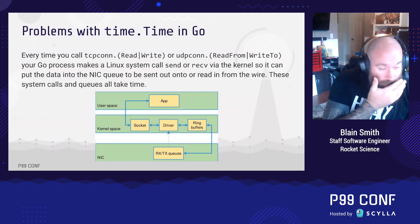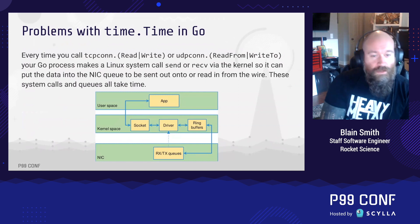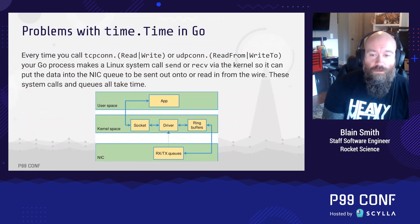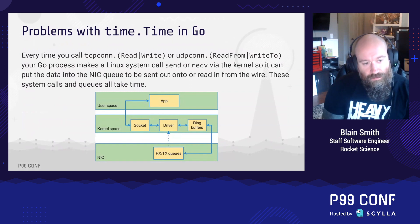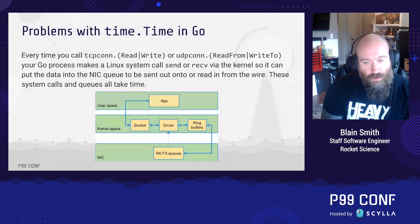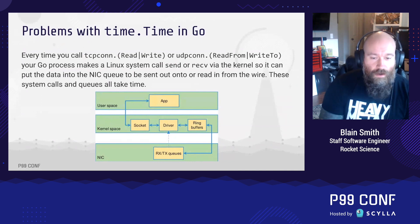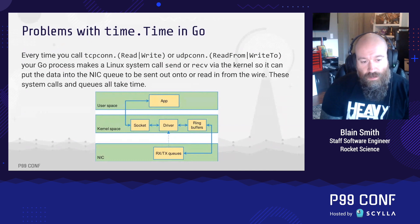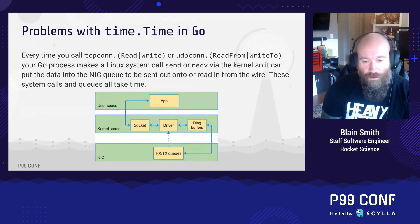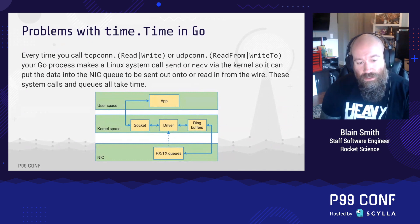The problem is that every time we use a TCP conn read/write or a UDP read-from/write-to, our Go process — because it has its own runtime — makes a Linux system call to send and receive via the kernel. That kernel then puts that data on the NIC queue before it actually gets sent out to the wire. The system calls and these queues all take time. Where our Go program runs is at the top layer in user space, but the two layers below are where packets actually spend some amount of time before being transmitted over the wire.